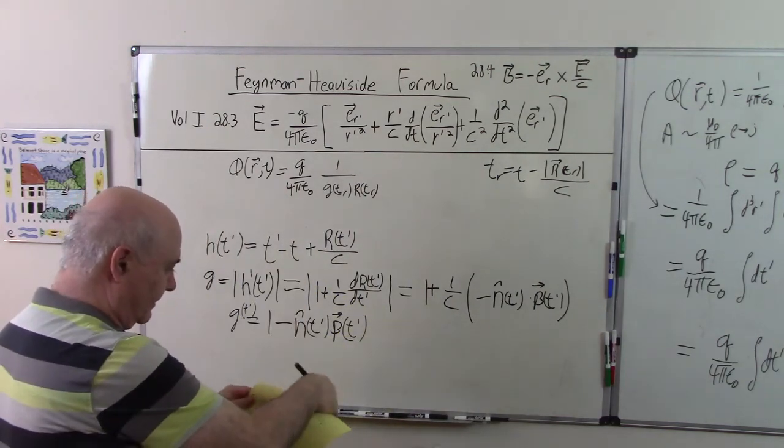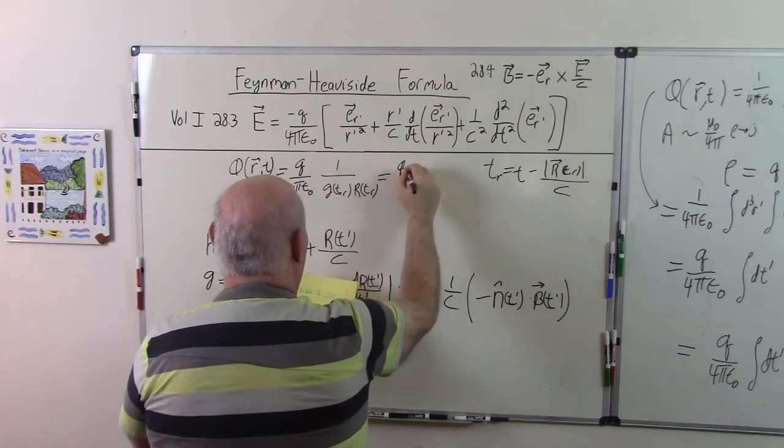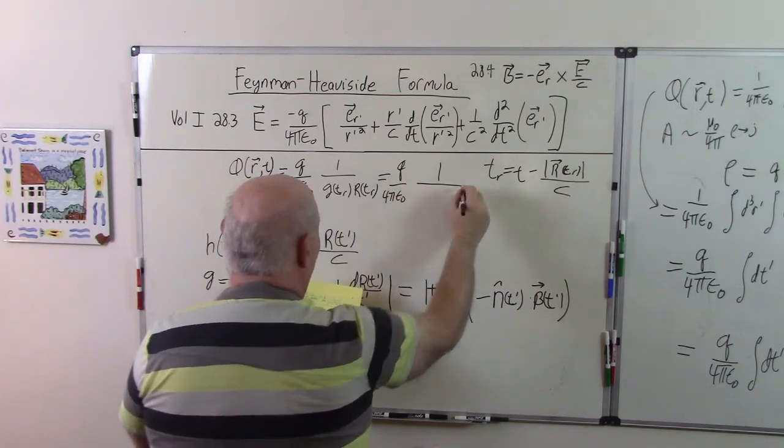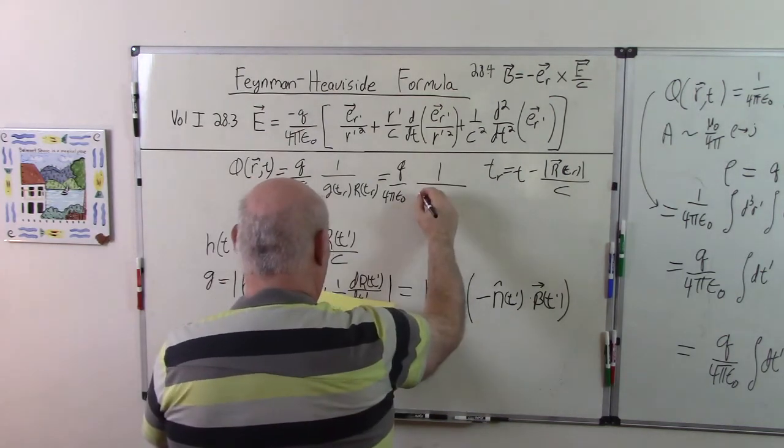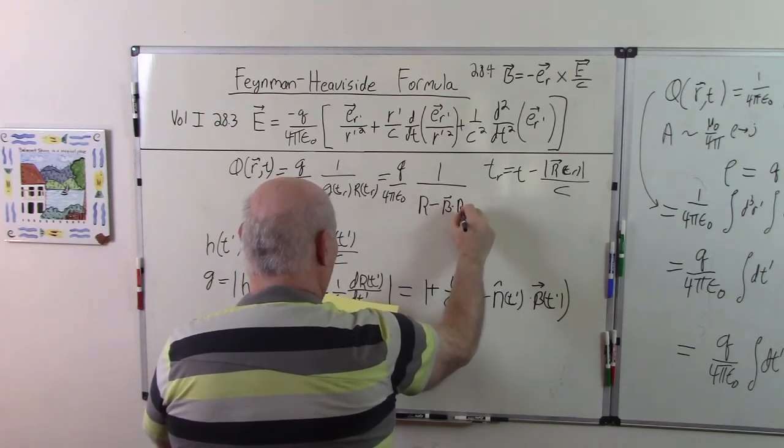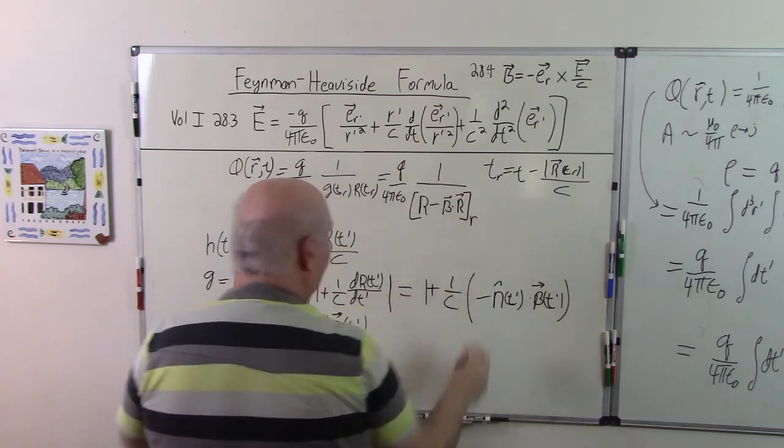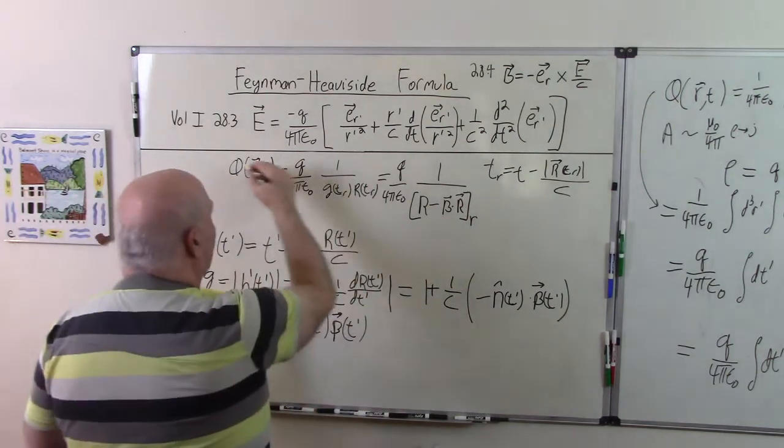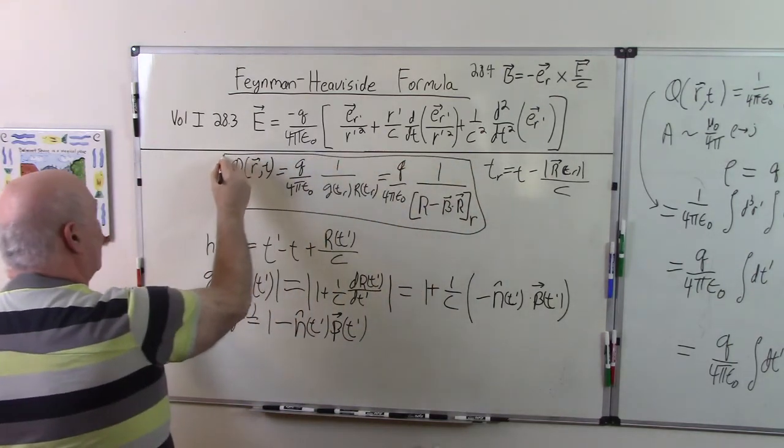Okay. And this is usually written. We substitute in this. So, we got 1 over r minus β dot r. Put all of this in brackets. When I put a subscript r, it means it's evaluated at this retarded time. So, this is the famous scalar potential for the Lienard-Wiechert.